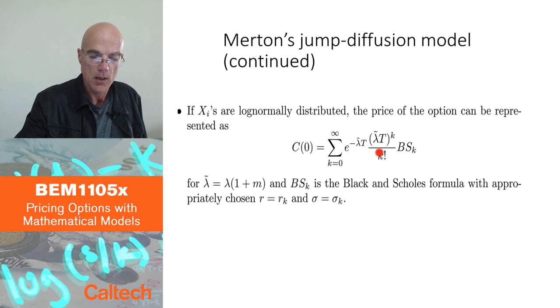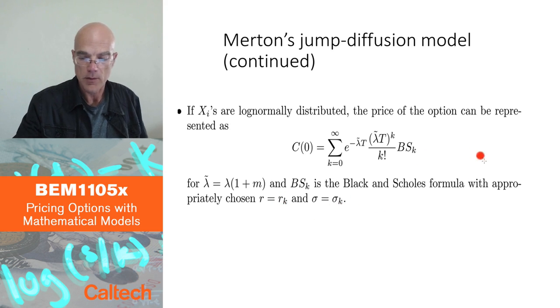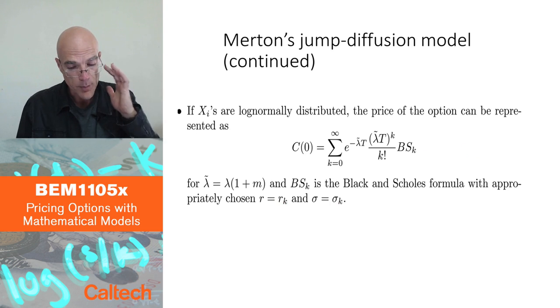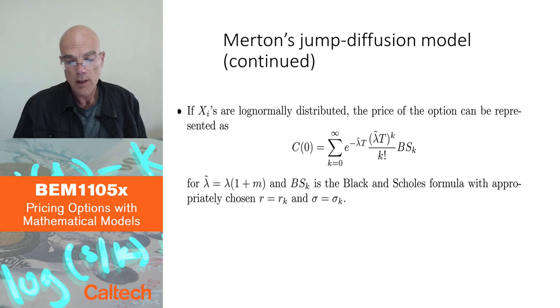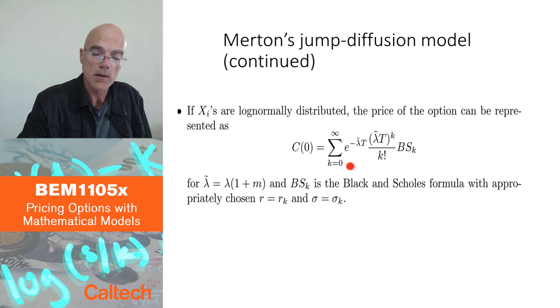There are some adjustments here. If you do it carefully, you actually have to change lambda tilde to lambda (1 plus that constant M). And also Black-Scholes prices with some specific interest rate and some specific volatility, which takes some algebra to compute what they are, but it can be all computed. And you do have a formula. It's an infinite weighted sum of Black-Scholes type formulas.